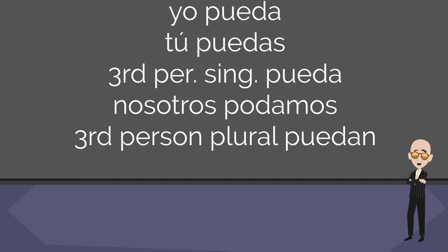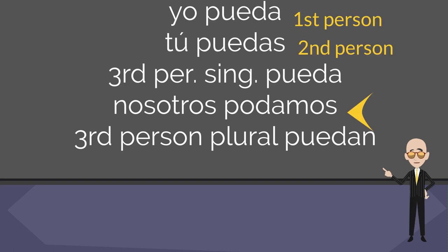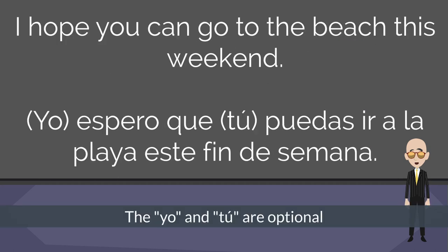We're going to continue to use that trick with the present subjunctive. But in order to do so, you're going to have to learn those forms of the verb poder. If you don't want to dedicate a lot of time to all these conjugations right now, just focus on the first and second person. As you can see, they're all very similar, except for nosotros, which is podamos. Now you should have all you need to translate this sentence: I hope you can go to the beach this weekend — Espero que puedas ir a la playa este fin de semana.